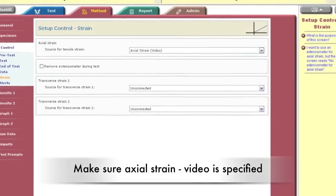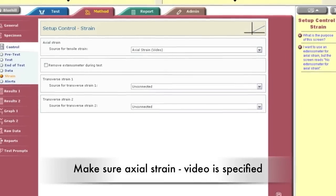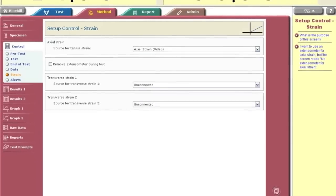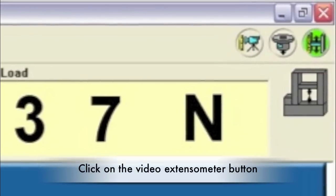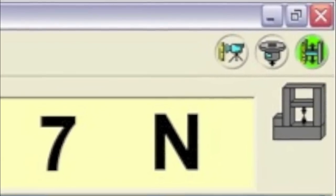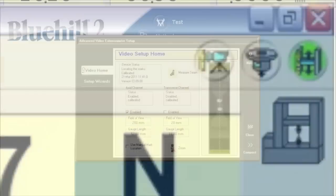In the method tab under the control menu, click on strain and specify that the axial strain is measured by video. Click the video button in the top right corner. Click enable under the axial channel, telling the software to measure the strain in the vertical direction.